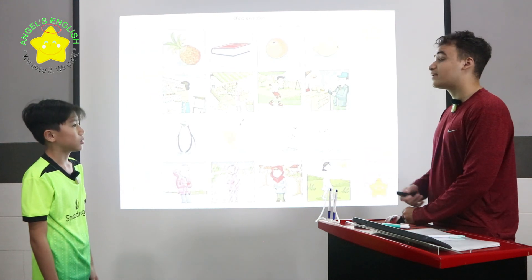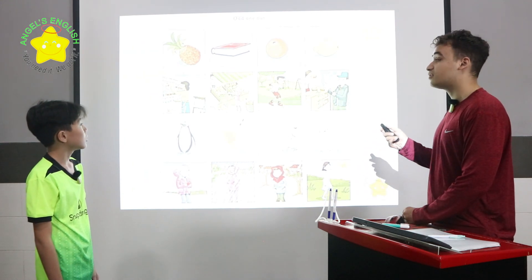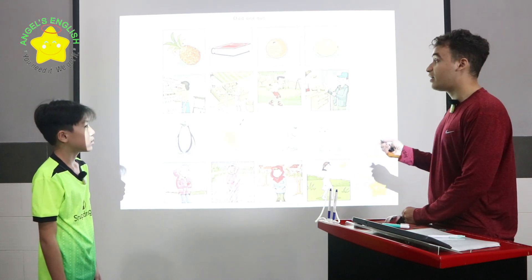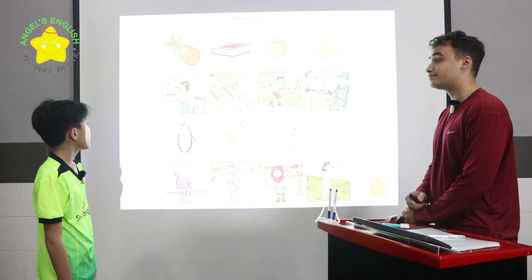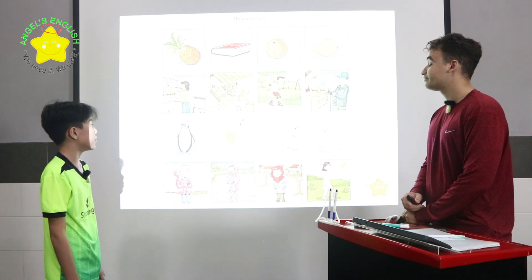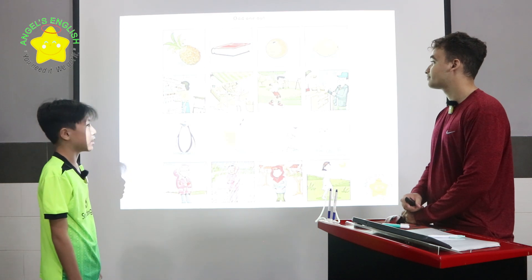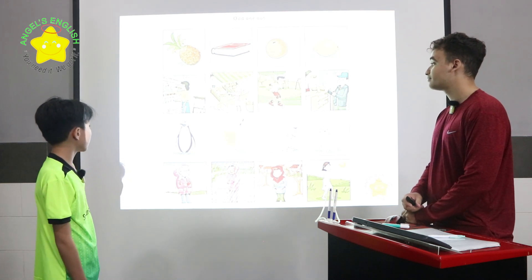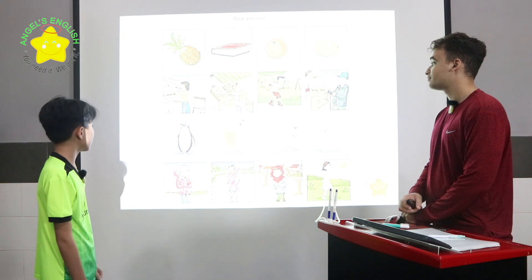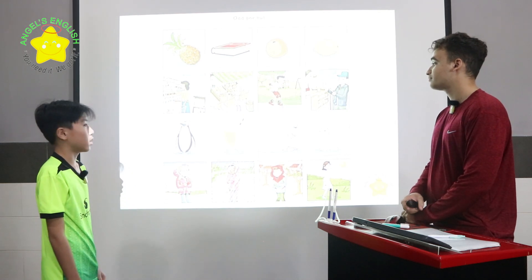This is called odd one out. In row one, the book is different because the pineapple, the orange, and lemon are all fruits. Can you please tell me which one is the odd one out in rows two, three, and four? In row two, picture three is different because pictures one, two, and four show shopping. In row three, picture two is different because pictures one, three, and four are all animals.